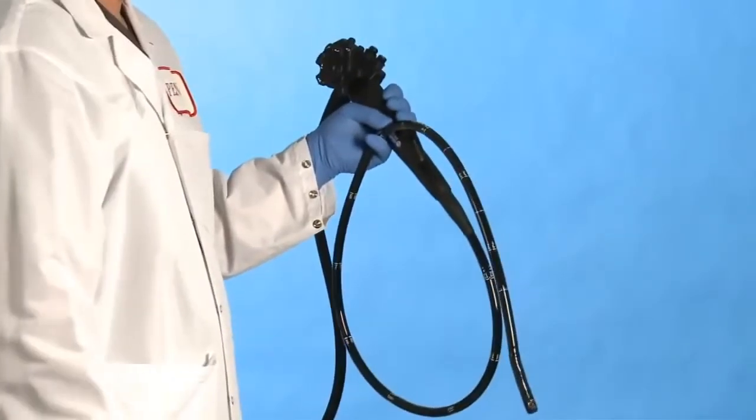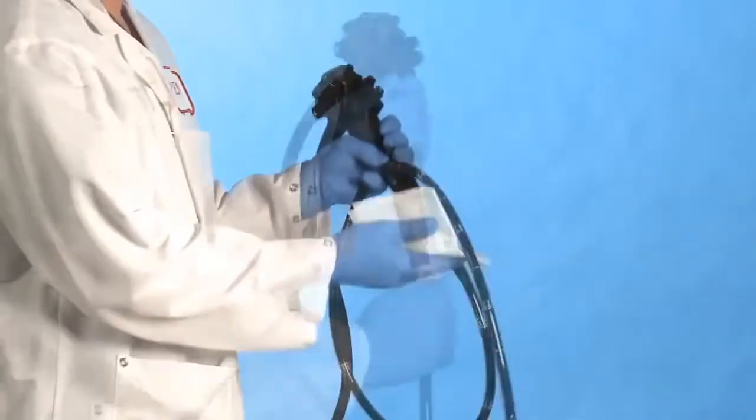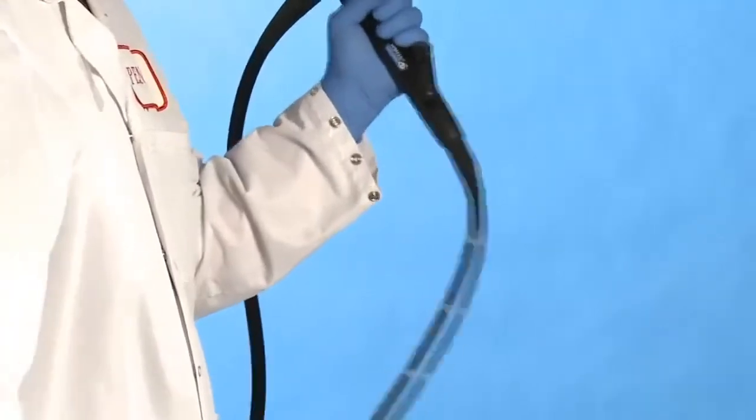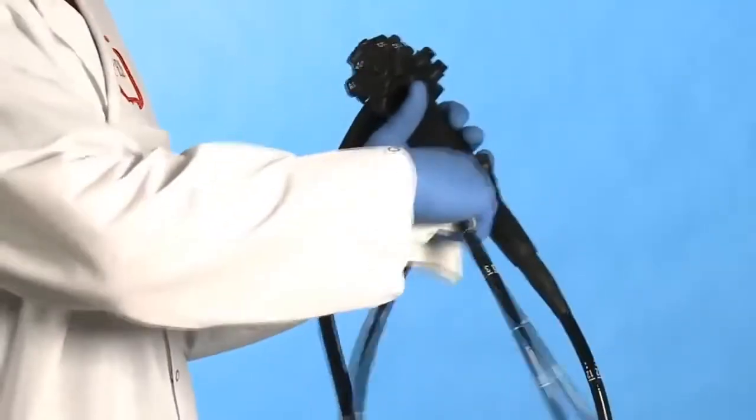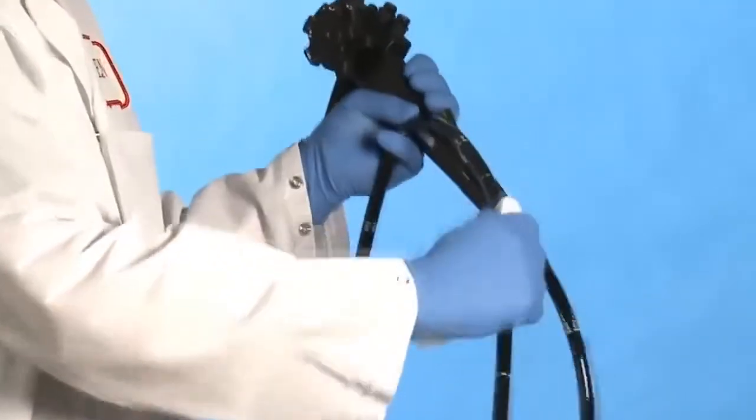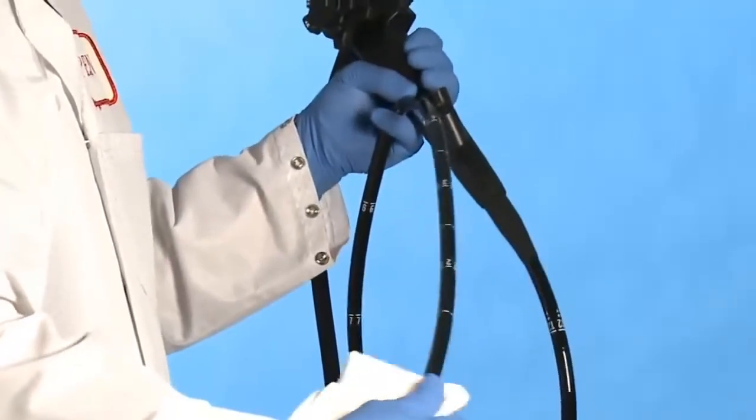Wipe in a downward motion from the control body root brace to the distal end of the endoscope. Do not pull the flexible tube through your hands in order to avoid potential impact damage to the distal end.